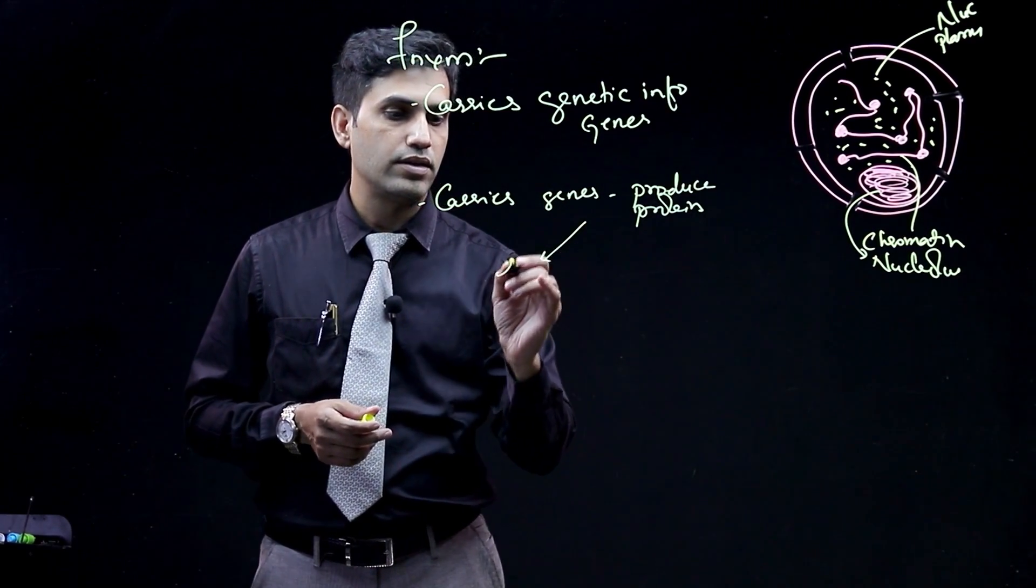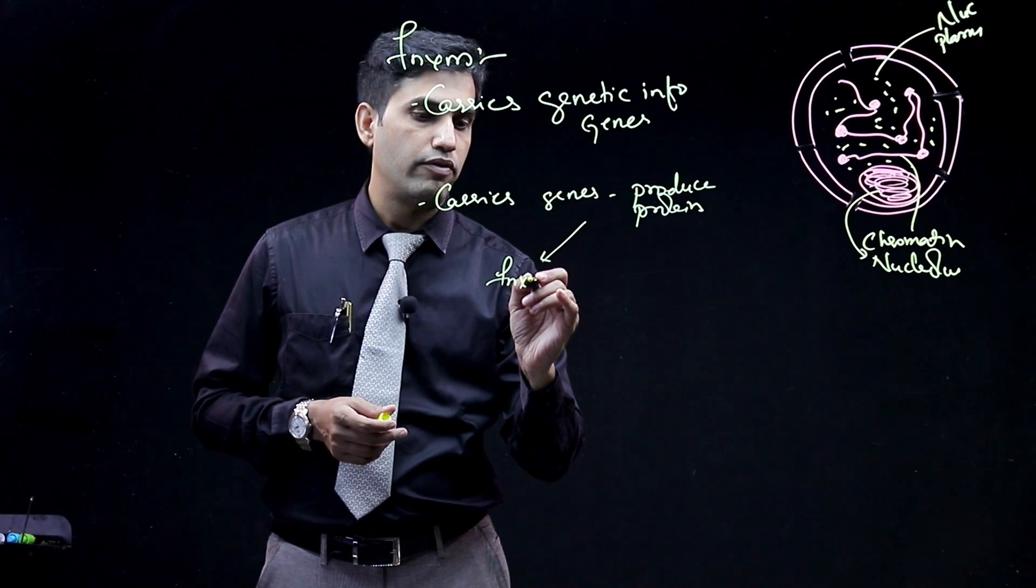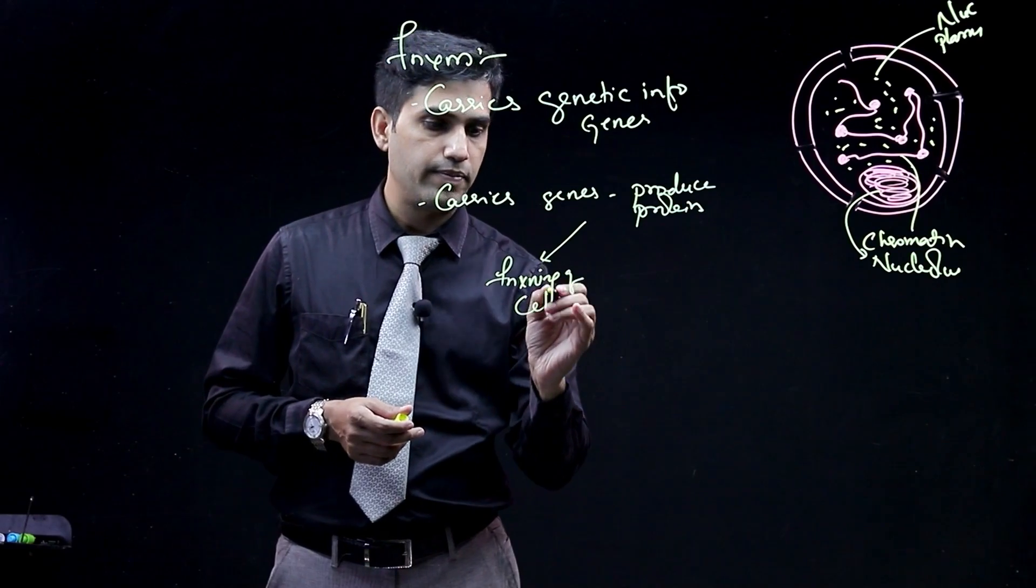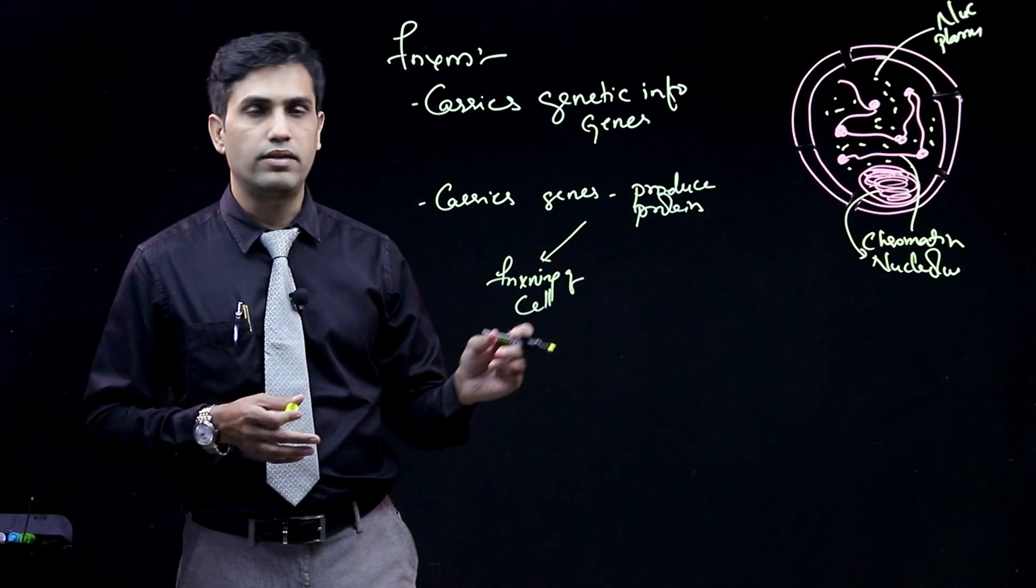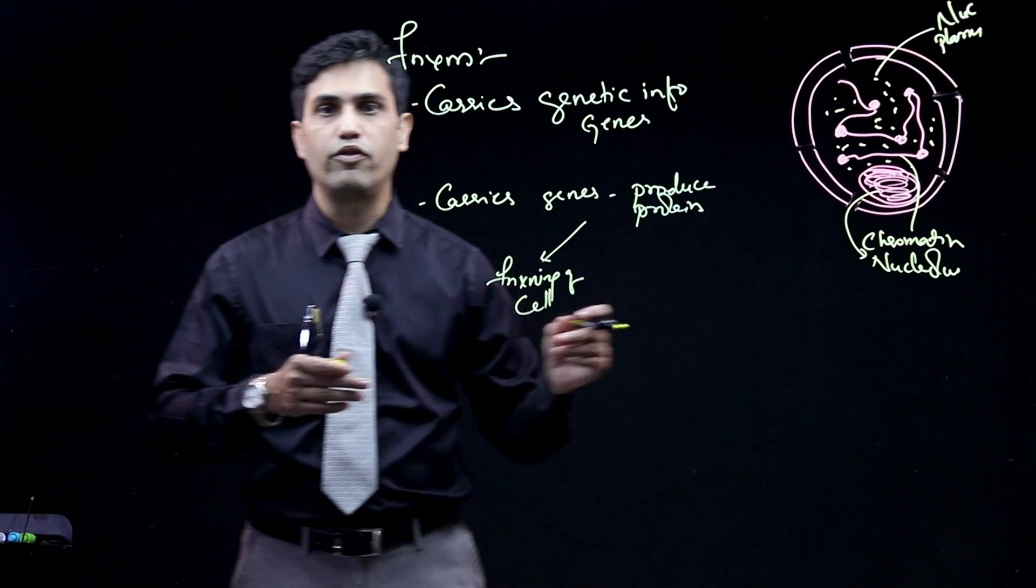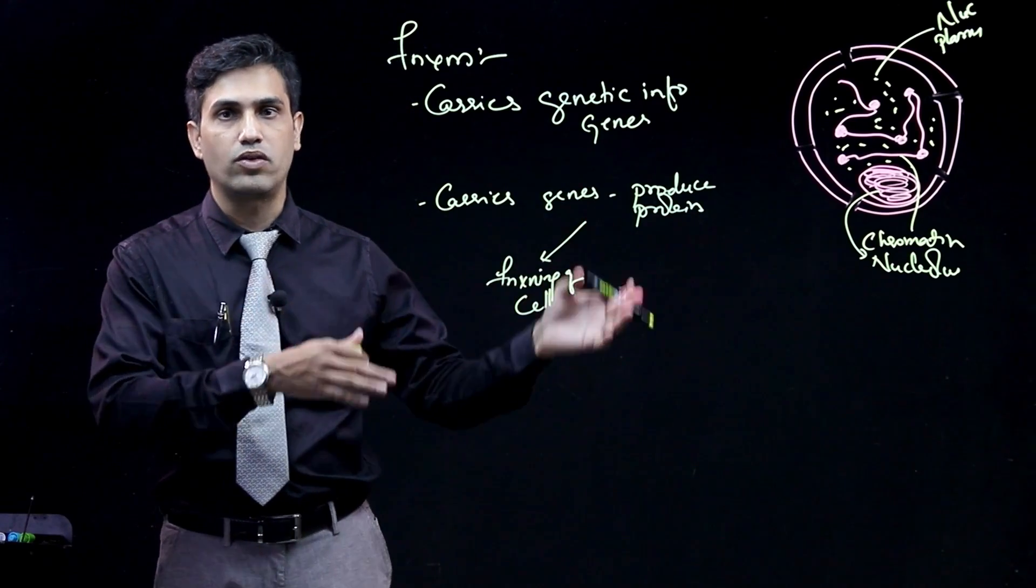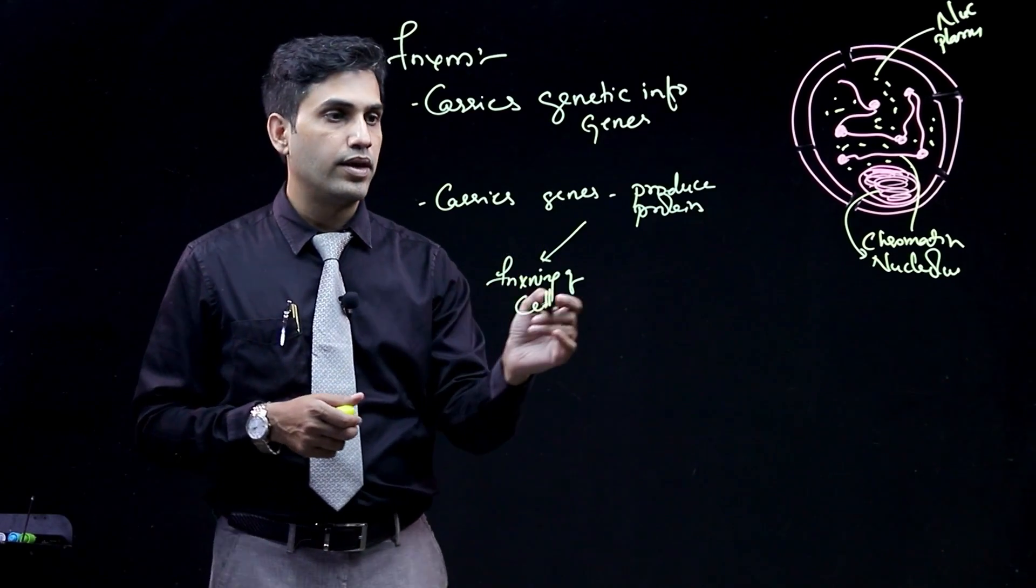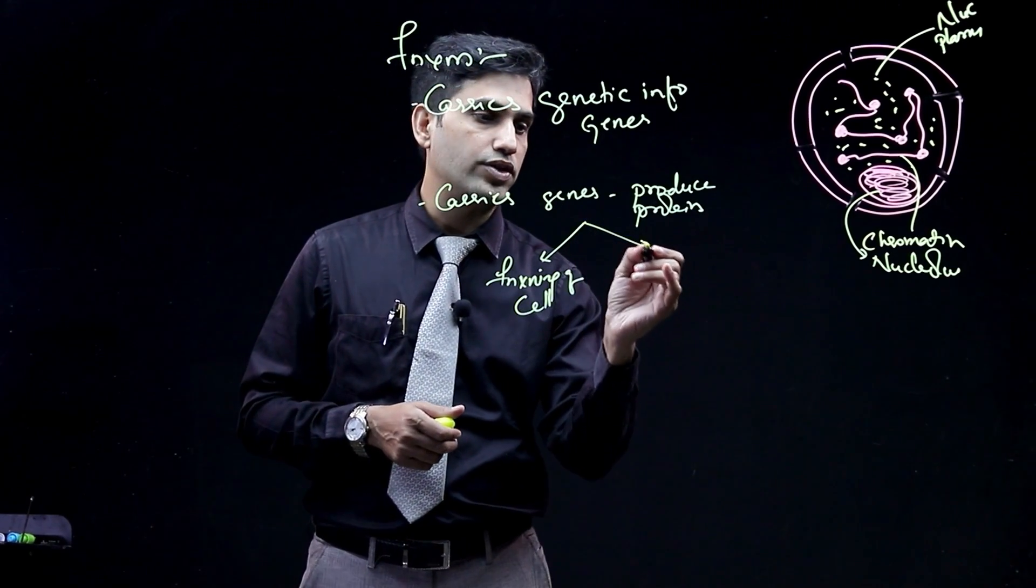One is functioning of the cell - its own cell. Its mRNA for the mitochondrial enzymes, for the peroxisomal enzymes, for the lysosomal enzymes - all this is coming from here. Then for the functioning of human body also.